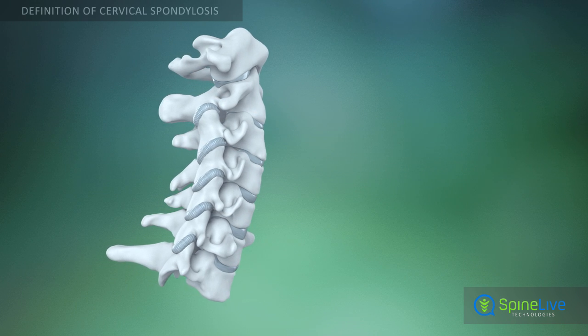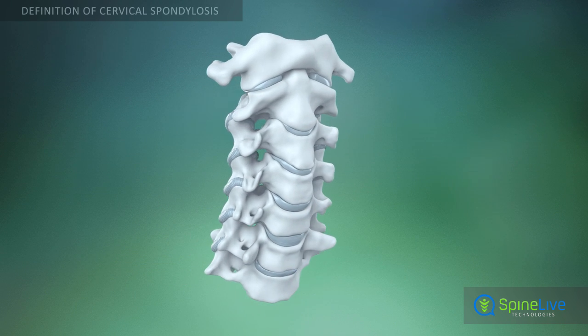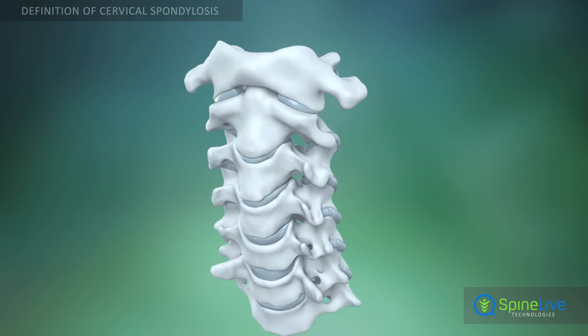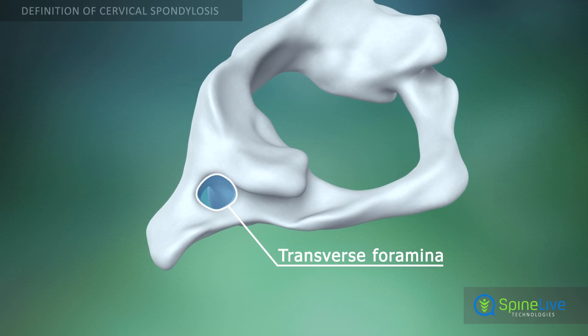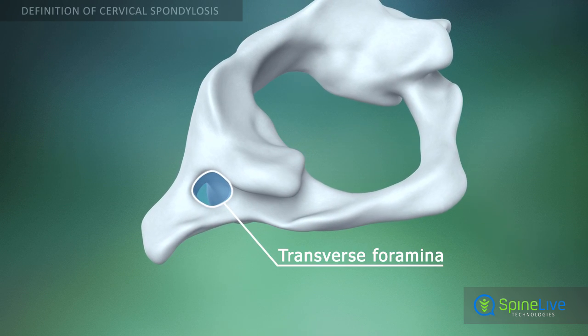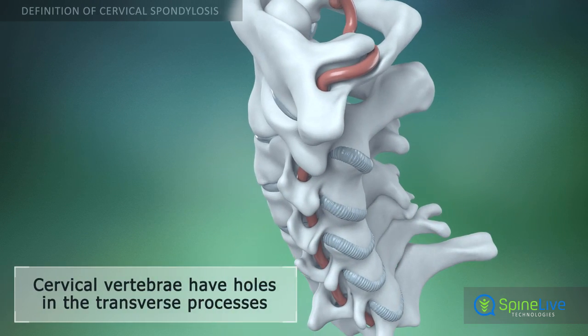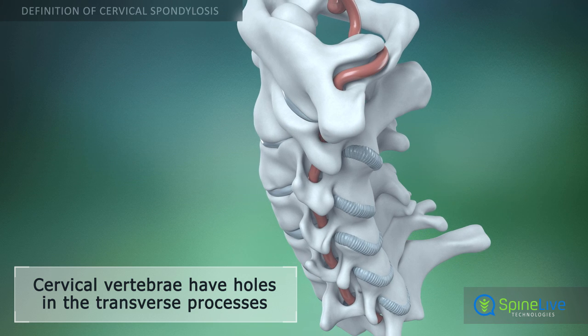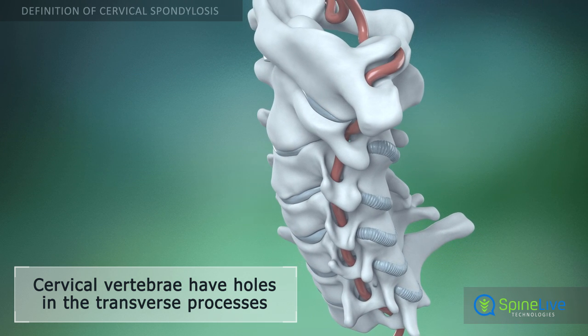Cervical vertebrae are different from other vertebrae because they have holes in the transverse processes called transverse foramina. Arteries, which supply the brain with blood, come from the neck through these holes.